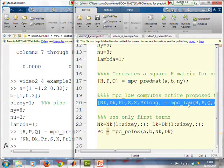So there we go. You can see we've got this MPC law and it produces N_k, D_k, P_r.